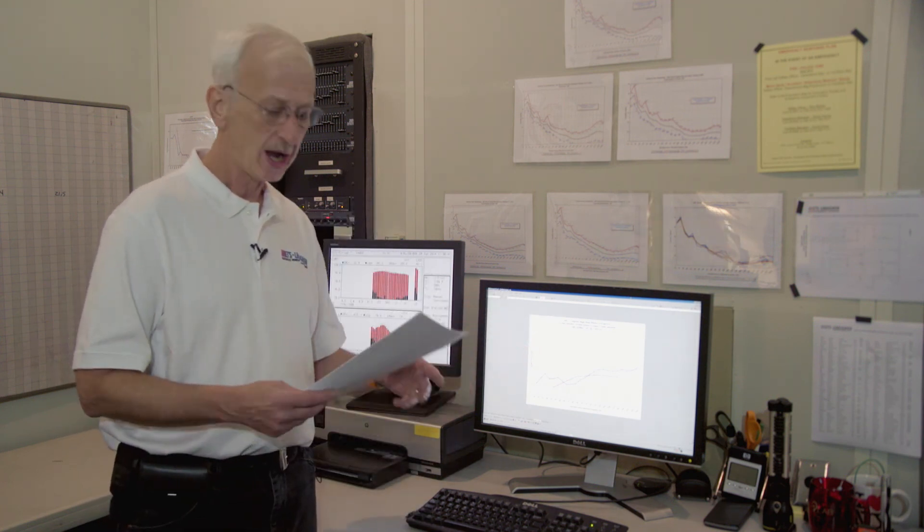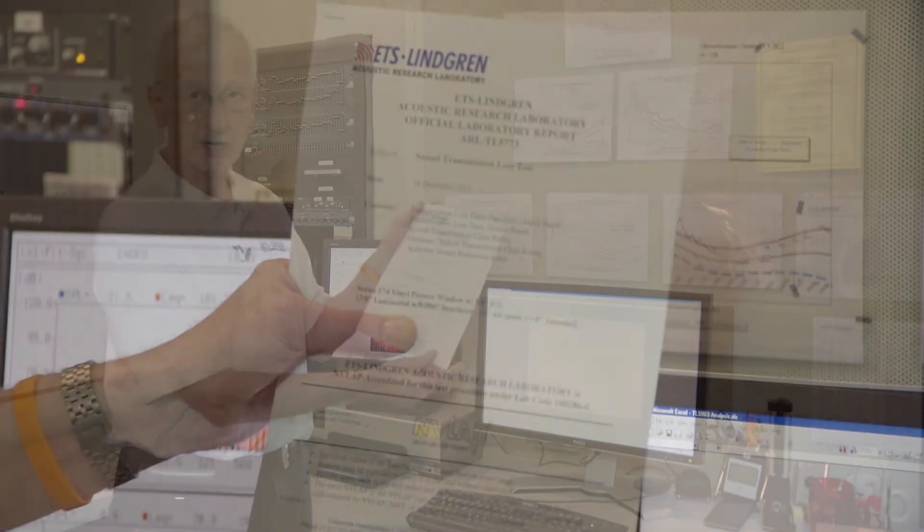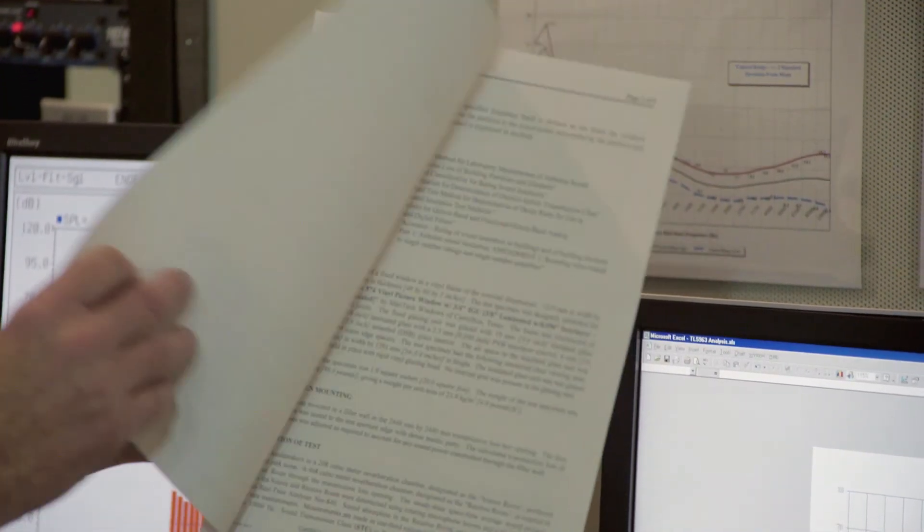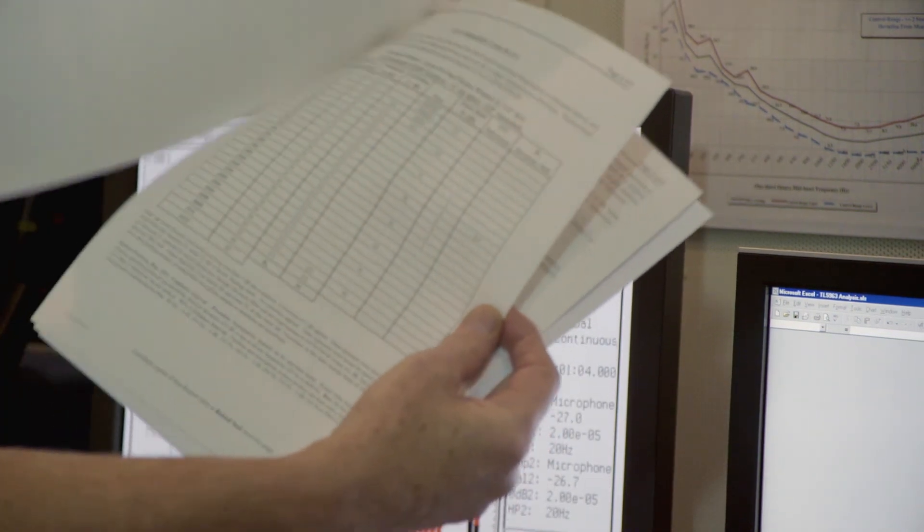At the end of that, then we provide an accredited report that has the NAVLAP logo on it. It meets all the requirements of the testing standards. It's a five-page report that includes this graph and a table of all the results.